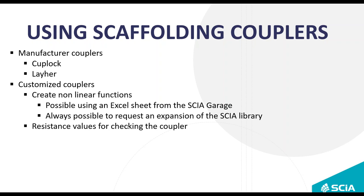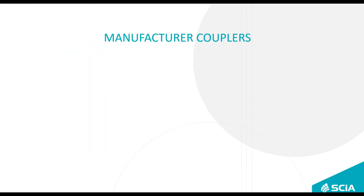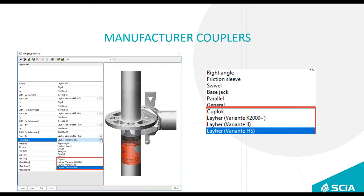There are two ways to insert a coupler: as a default hinge on the beam — the nonlinear function is taken into account in the analysis but no coupler check is performed — or from the library, where it will be verified in the coupler check. The key difference is that adding from the library includes resistance values and triggers the verification. Nonlinear supports and nonlinear parameters on beams are also important options.